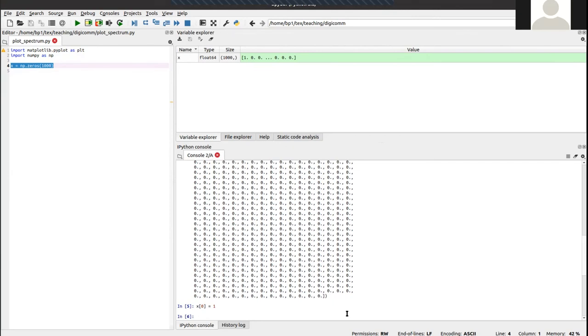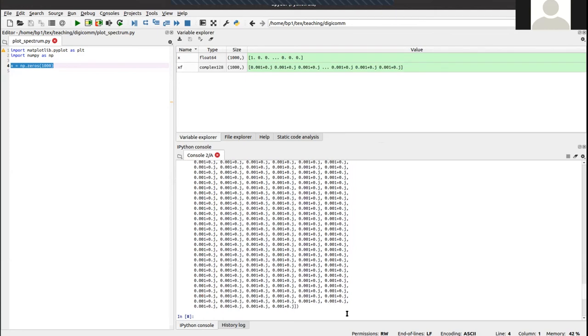And so now we can do an inverse Fourier transform on this. Let's call this here xf equals to numpy fft, i fft of x. So let's have a look what xf tells us here.